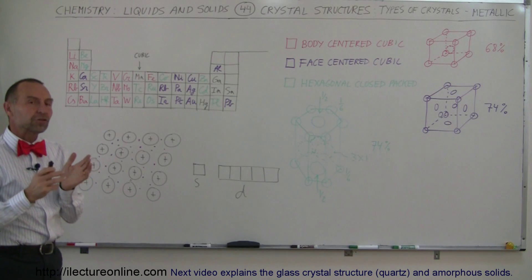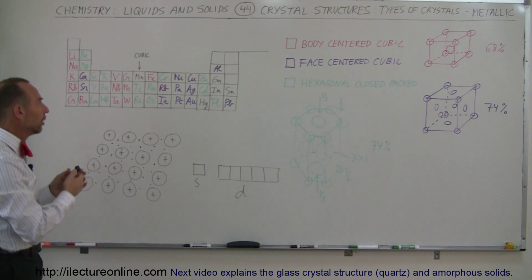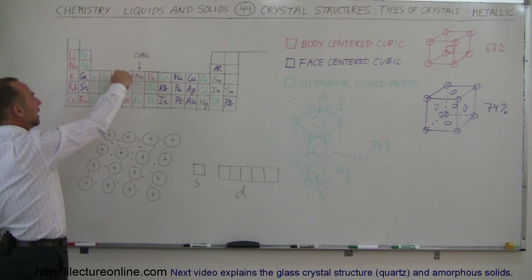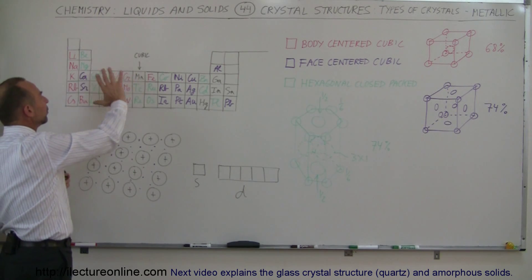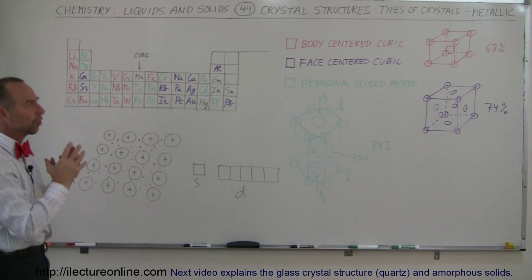In the body-centered cubic structure, the metals tend to be harder, such as iron, vanadium, chromium, niobium, and molybdenum. Those tend to be harder metals because of that particular structure.